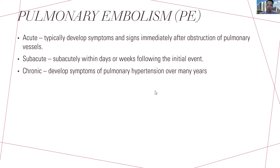For classifications, you can classify by timing of symptoms: acute, subacute, and chronic, based on when symptoms occur after the pulmonary embolism. In the chronic form, it develops into chronic thromboembolic pulmonary hypertension, where patients present with long-term symptoms, and sometimes we detect these patients via echocardiogram.